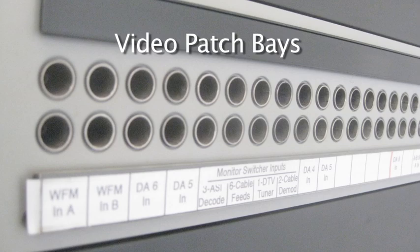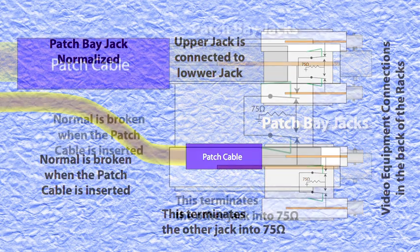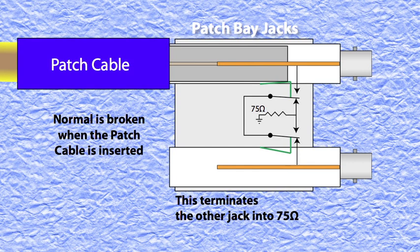Patch bays are made up of two jacks. The upper one is connected to the output of a piece of equipment, and the lower one is connected to the input of the following piece of equipment. Internally, these two jacks are connected, or normalized. With no patch cord in place, the two pass the signal from the upper one to the lower one. When a patch cord is inserted, the normal is broken and the two jacks are not connected anymore. The jack without a cable is terminated into a 75-ohm resistor, and the other jack is connected to the patch cord.